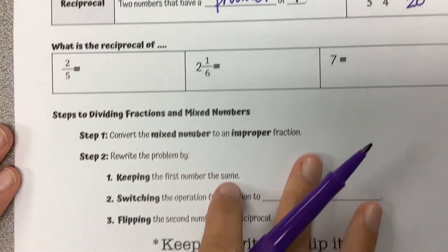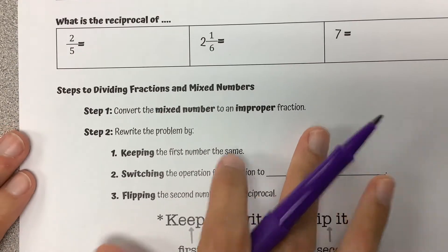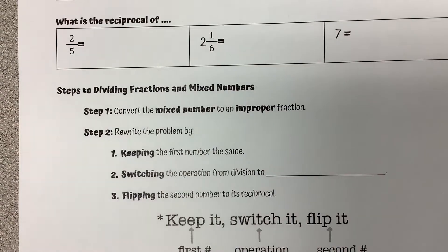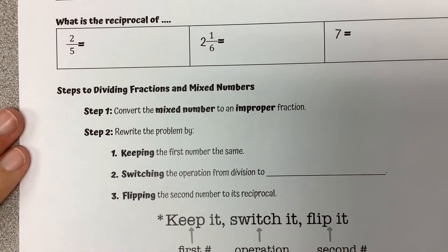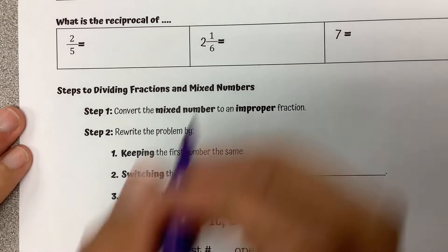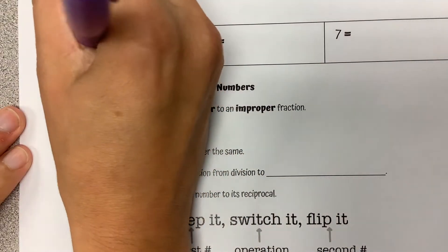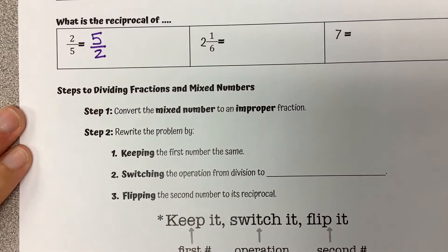So if we're looking at these examples here, 2 over 5 — the reciprocal of that, if we flip that around, would be 5 over 2.